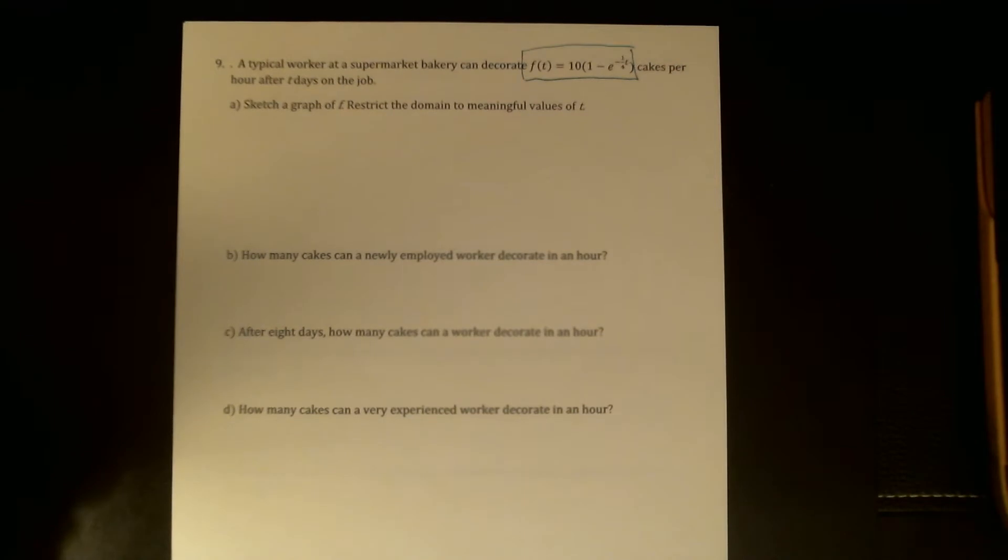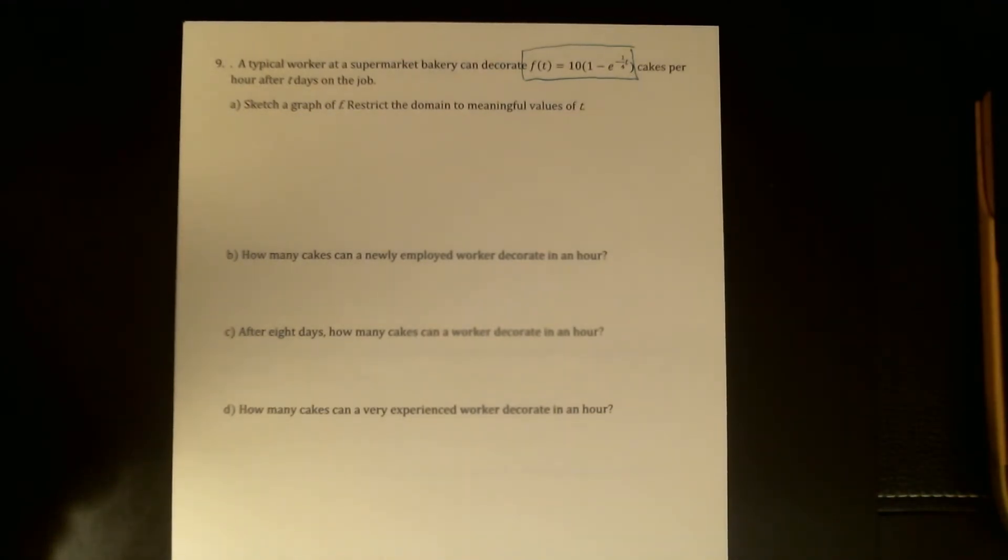So very first thing we're supposed to do is try and sketch a graph of f. Because this is an application we're going to restrict the domain so that we're only seeing values of t that make sense. What I really like about this is it's actually really messy. I don't want to pick points and follow them exactly through all the transformations.